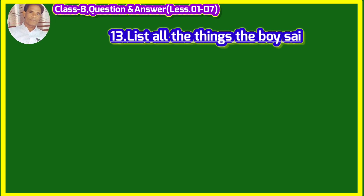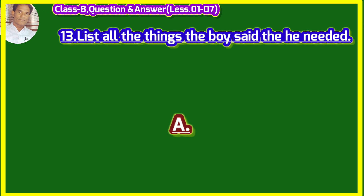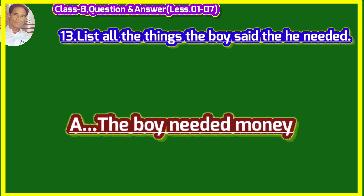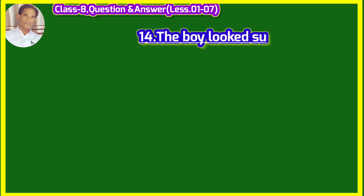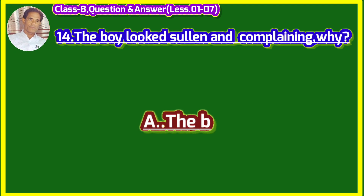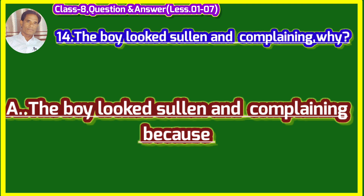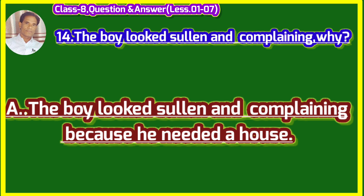List all the things the boy said he needed. (Unn sabhi chijon ki suchi banao jo ladke ne kaha use awashyak hain.) The boy needed money, house, and boat. Ladke ko rupye, ghar, wunnav ki askatah hai. The boy looked sullen and complaining. Why? (Ladka hathi aur shikayat karne wala lagta tha. Kyun?) The boy looked sullen and complaining because he needed a house. Ladka dukhi aur shikayat karne wala lagta tha kyunki vaha ek ghar chahata tha.